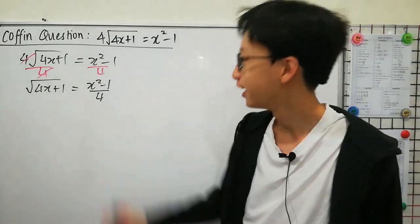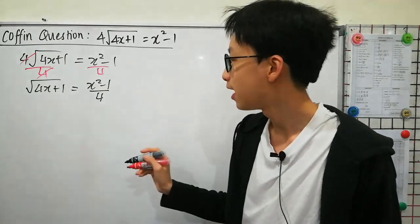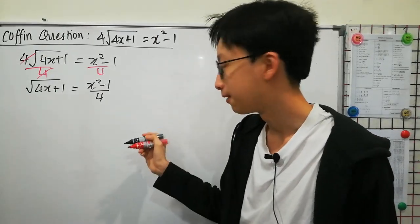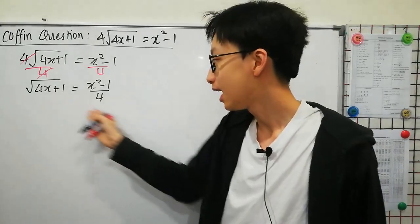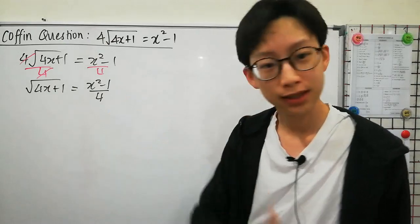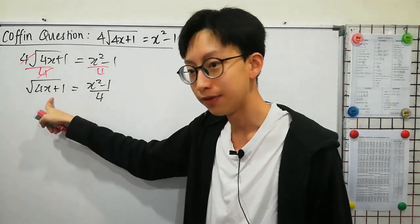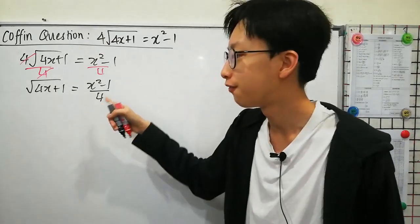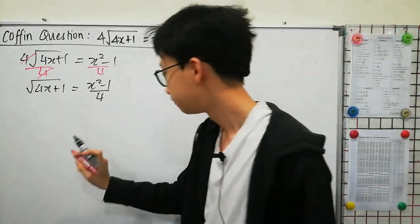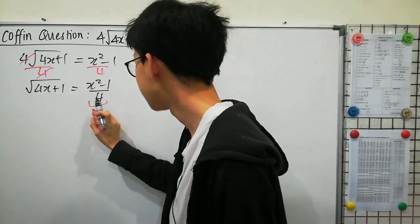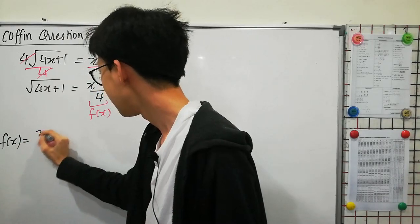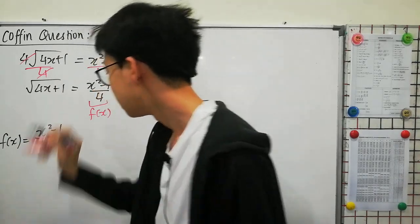Alright, what should we do then? We have square root of 4x plus 1 on the left-hand side and x squared minus 1 over 4 on the right-hand side. If you look at it carefully, these two are just very similar. I will tell you that the right-hand side is the inverse of the left-hand side. Let me show it to you. I will let the right-hand side be f(x), so: f(x) equals x squared minus 1 over 4.